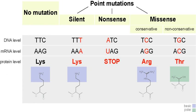RIP causes G:C to A:T transition mutations within repeats; however, the mechanism that detects the repeated sequences is unknown. RID is the only known protein essential for RIP — it is a DNA methyltransferase-like protein that, when mutated or knocked out, results in loss of RIP. Deletion of the RID homologue in Aspergillus nidulans (DMTA) results in loss of fertility, while deletion of the RID homologue in Ascobolus immersus (MASC1) results in fertility defects and loss of methylation induced premeiotically (MIP).